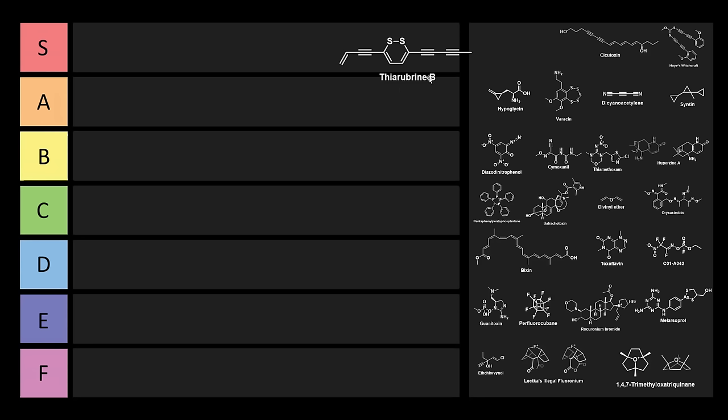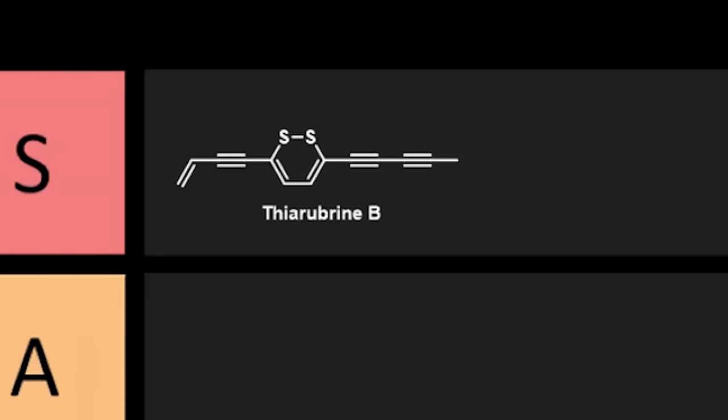Thiarubrine B has also shown light-mediated activity against HIV-1. However, this paper was published a long time ago, and we currently have more effective treatments against HIV. Thiarubrine B has this really weird structure. This is like a cursed benzene analog. It's also got three alkynes and a double bond. So this is a really cursed one. I think this can go right into S-tier, which is appropriate, because it has sulfur in it.